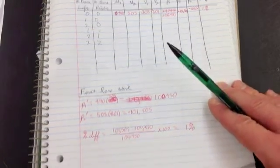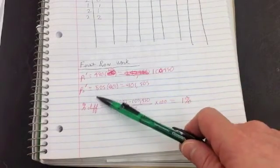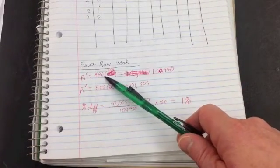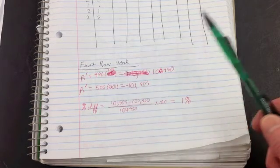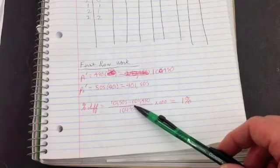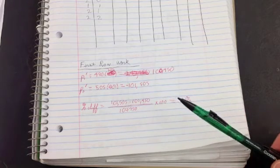So I showed my work down here. I found the first momentum by taking the mass times velocity, my second momentum, mass times velocity, and the percentage difference.